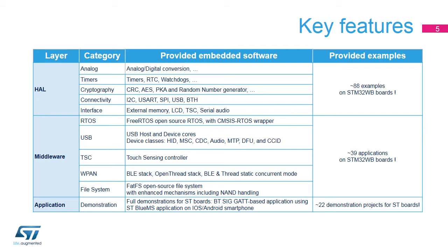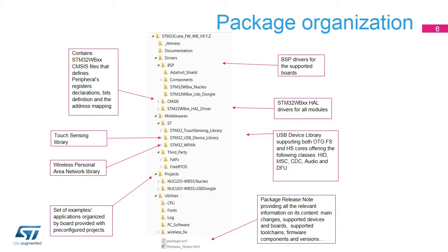The wireless stack is an ST solution for Bluetooth or thread connectivity. STM32WPen middleware contains the wrapper used to control the BLE and the open-thread stacks, and it also supports the BLE and thread static concurrent mode. Advanced demos putting together all the embedded software components are also provided in the STM32CubeWB package. Like all STM32Cube firmware packages, the STM32CubeWB firmware solution comes in a single zip file having the structure shown in this slide.